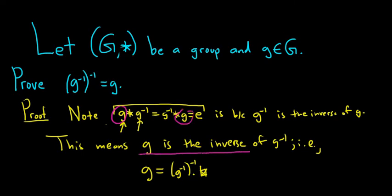So if you write that down and then think about it, what does that mean? It means g is the inverse of g inverse, which is exactly what we had to show. That's it. I hope this has been helpful.